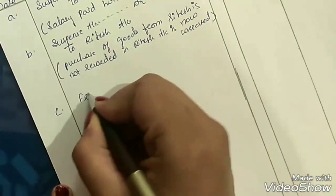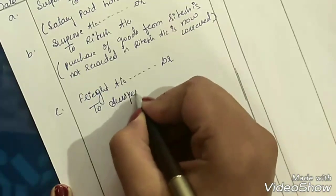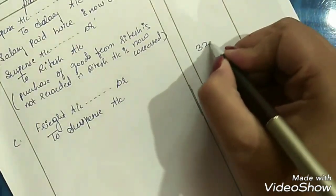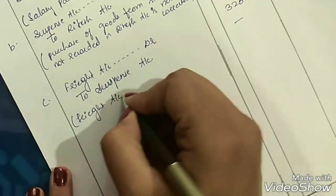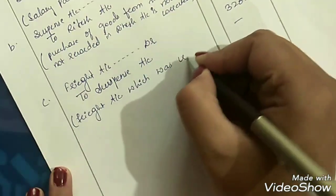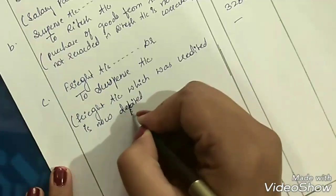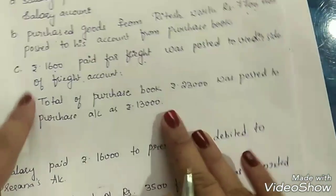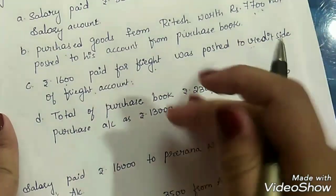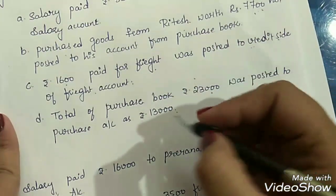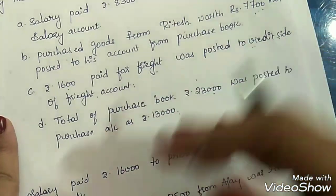The rectification entry becomes: freight account debit to suspense account, rupees 3200. Again, the mistake is only in one account — freight account — so suspense account is used. Write in the answer sheet: freight account debit to suspense account, rupees 3200 on both sides. Narration: freight account which was credited is now debited. Next, transaction D: total of purchase book rupees 23,000 was posted to purchase account as rupees 13,000.